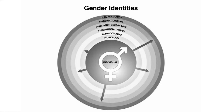We turn now to gender identity. Gender identity refers to how individuals and groups perceive and present themselves and how they are perceived by others. Please remember that gender identities are context-specific. I may behave with a particular gender identity in my workplace with my students, exhibit a different gender identity at home with my children or husband, and display certain gender behaviors in California and different ones in Brussels or elsewhere in Europe.